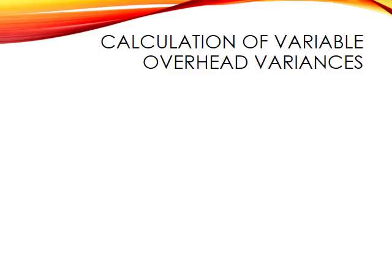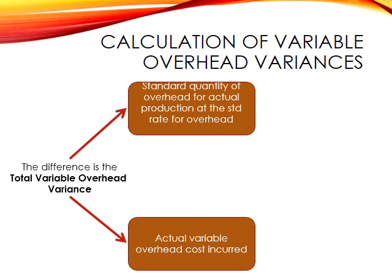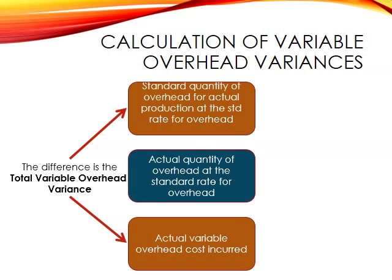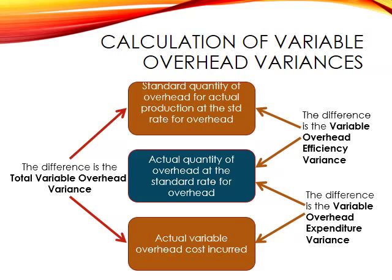To calculate our overhead variances, we first calculate the standard quantity of overhead for actual production at the standard rate, then compare that with our actual variable overhead cost. The difference is our total variable overhead variance. We then calculate a third figure: the actual quantity of overhead used at the standard rate. This allows us to split the total variance — the difference between the top two figures is the variable overhead efficiency variance, and the difference between the bottom two figures is the variable overhead expenditure variance.